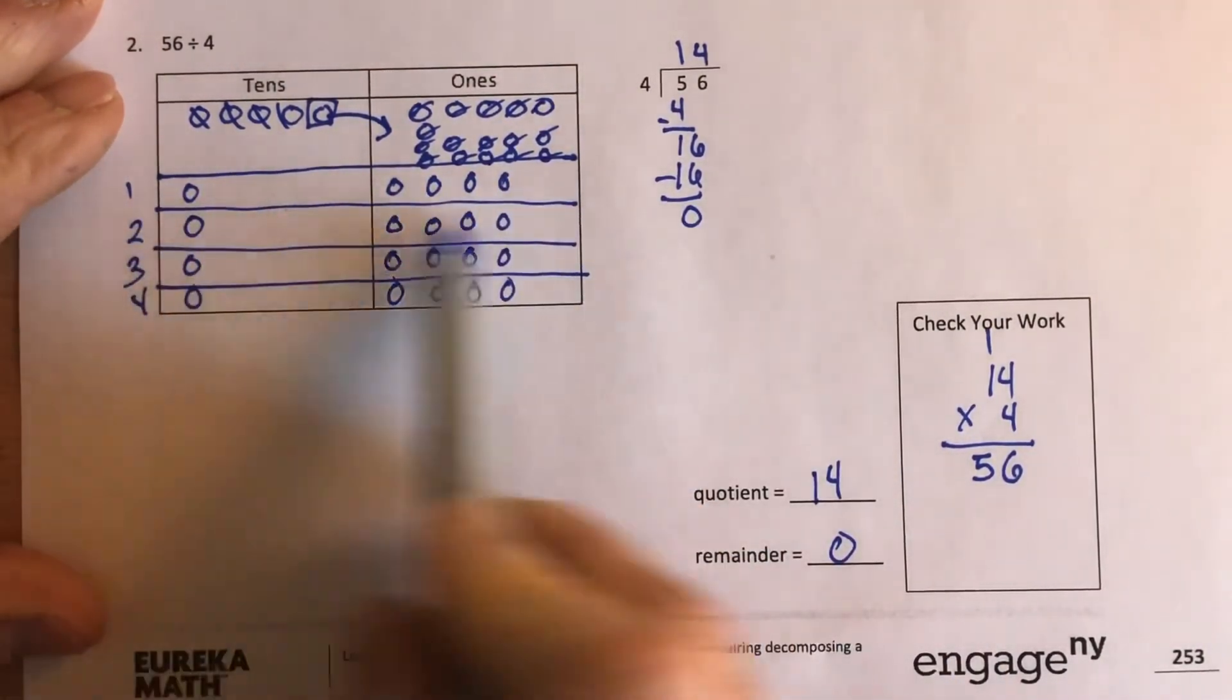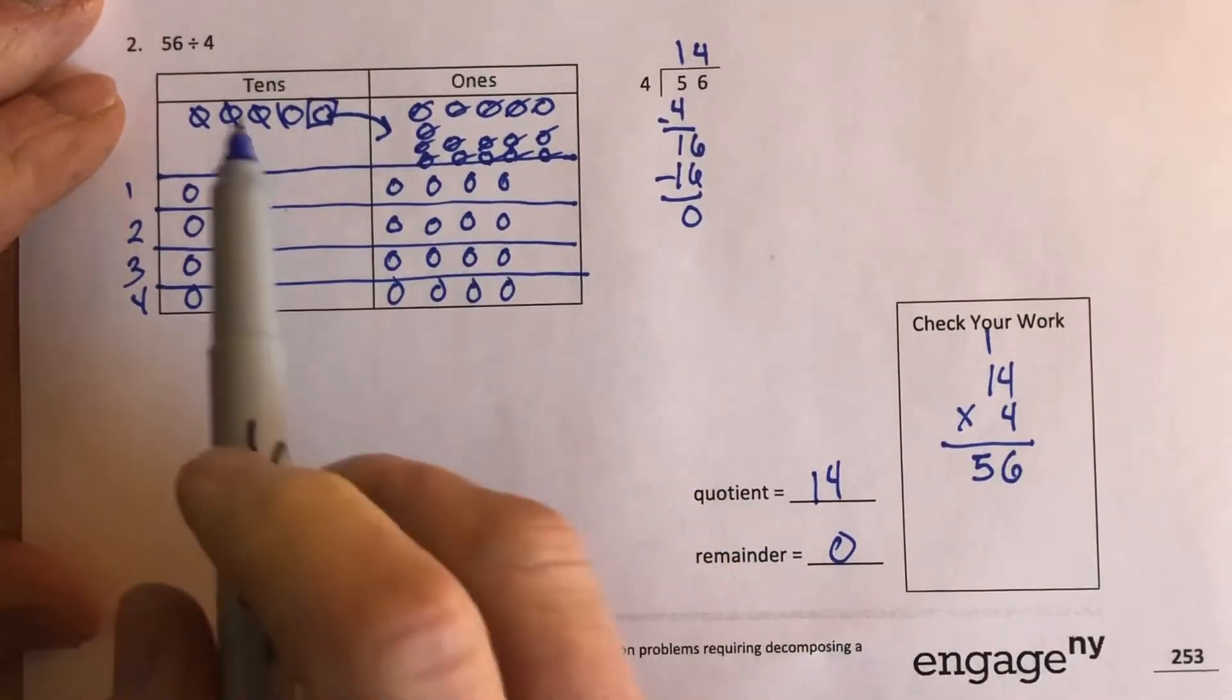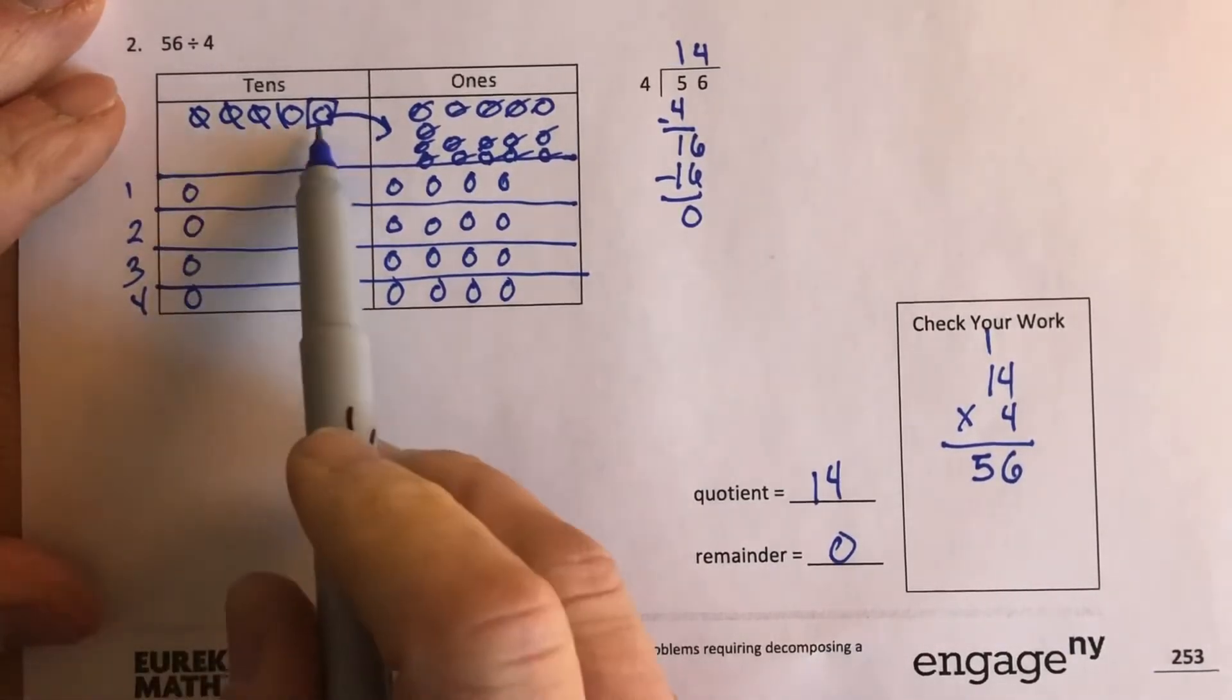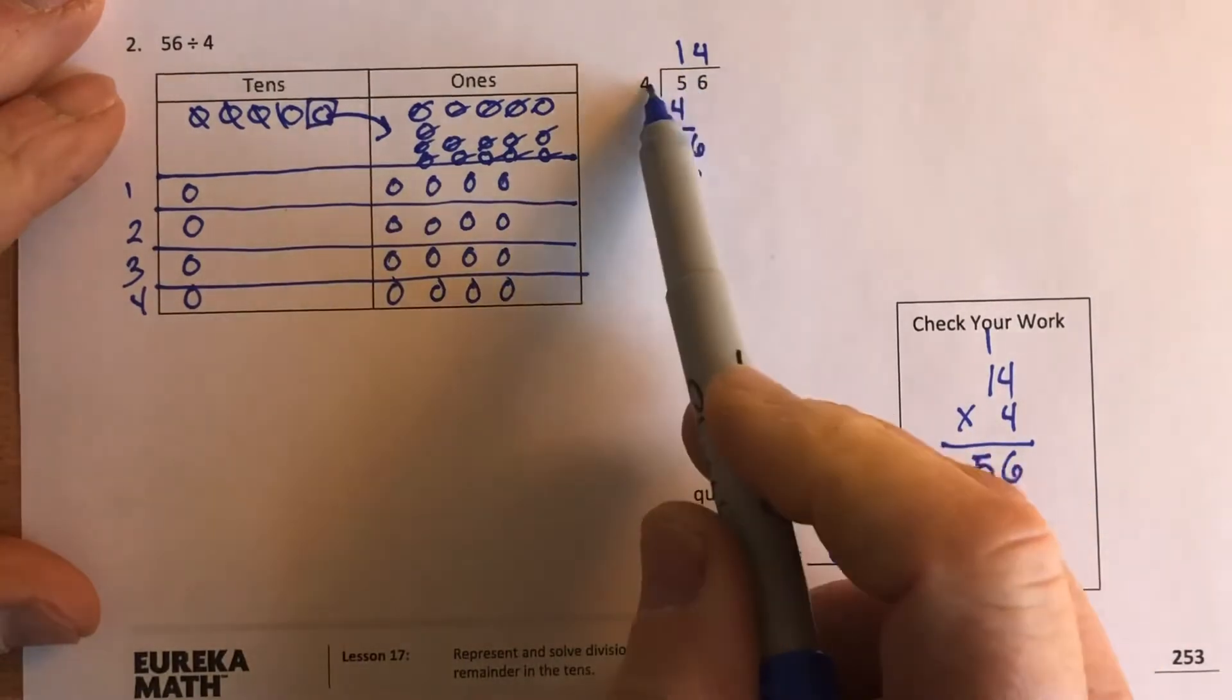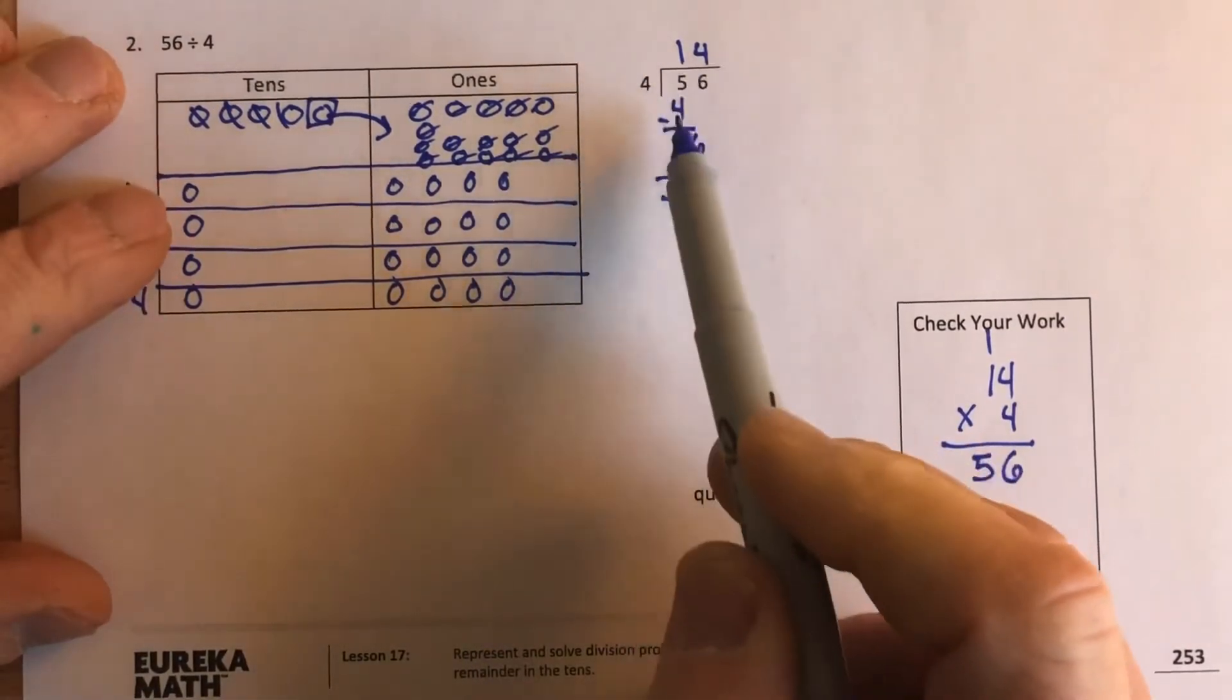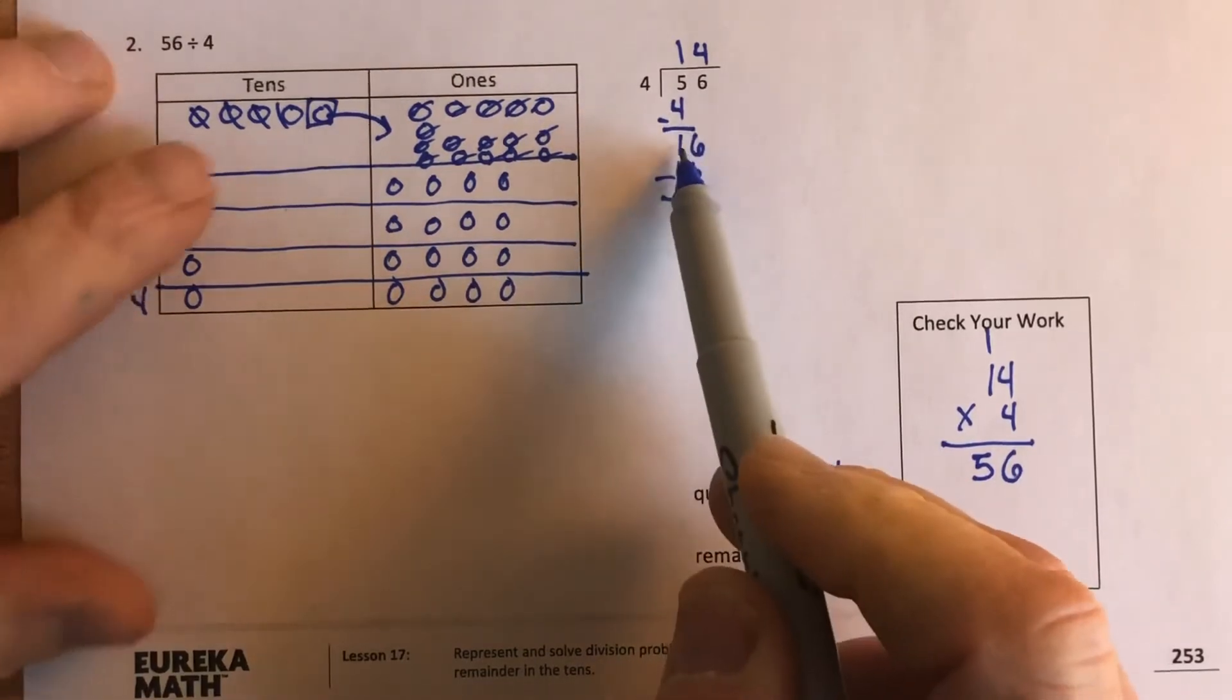Then just like above, I did one in each section. Each gets one ten and there's one ten left over. So that's what I did here. Four fits into five one time, see how each group has one. One times four is four, I subtract I get one. There's my one remainder, one ten remainder.